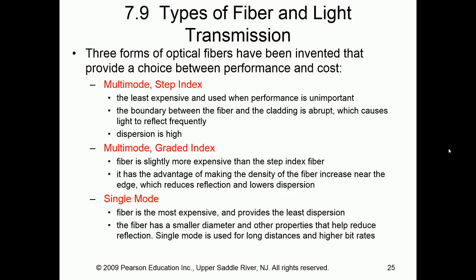When we deal with fiber optic, we have two major types: multi-mode and single-mode. Multi-mode is less expensive and is typically used when performance is not as important — it's the slower of the two but it's cheaper. Single-mode is the most expensive and provides the least dispersion. It has the smallest diameter, can go a lot farther, but it is incredibly expensive as opposed to multi-mode.